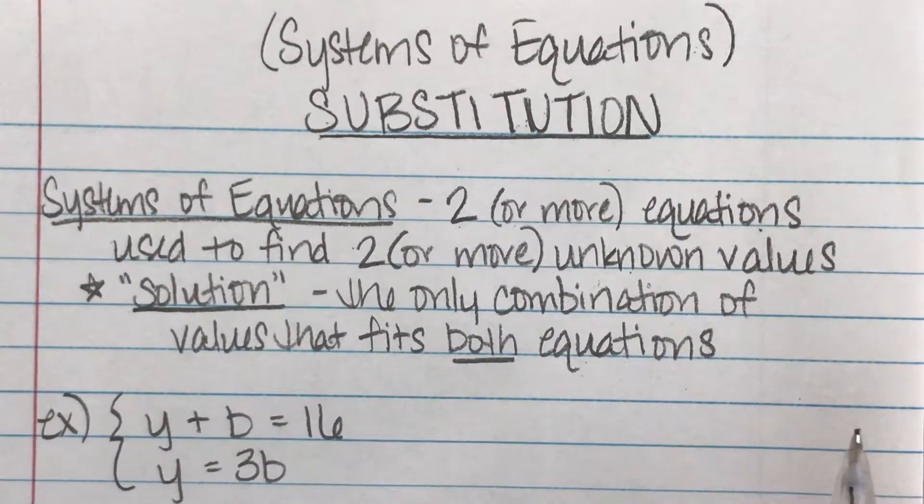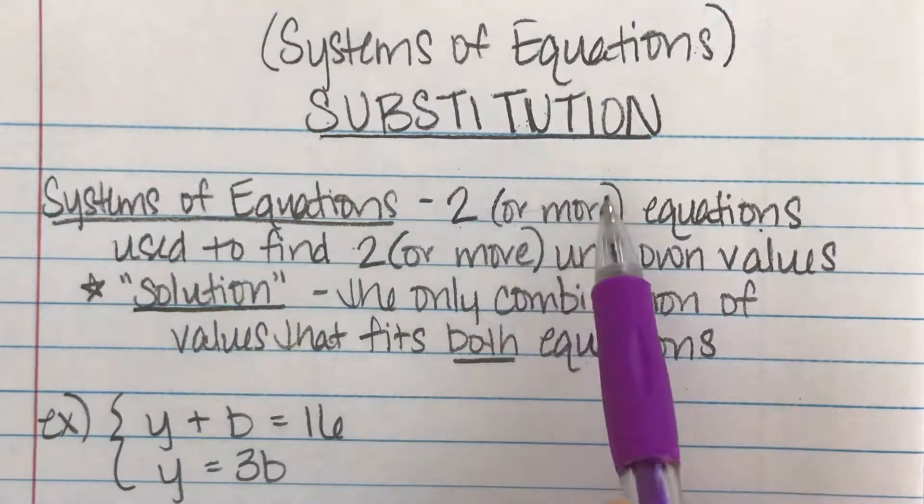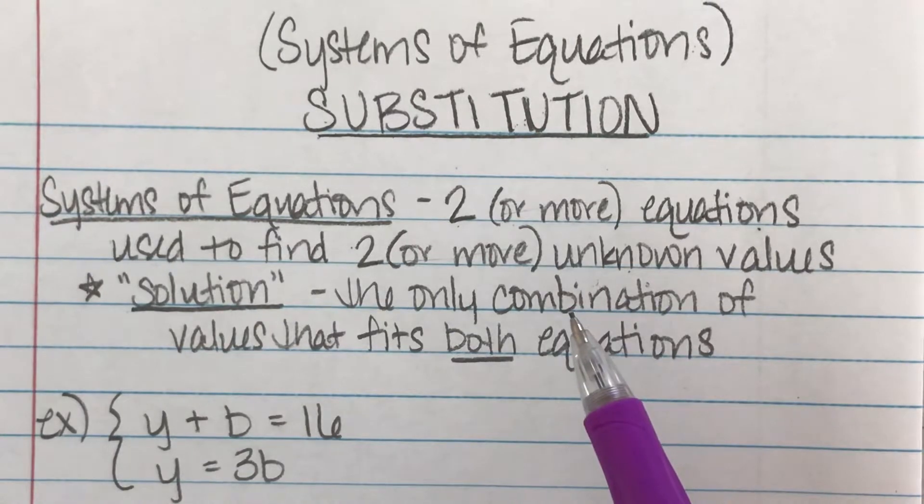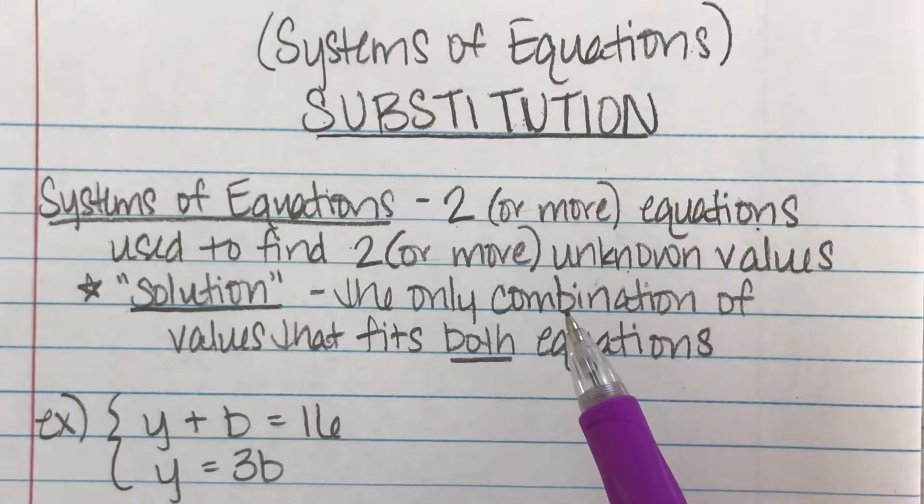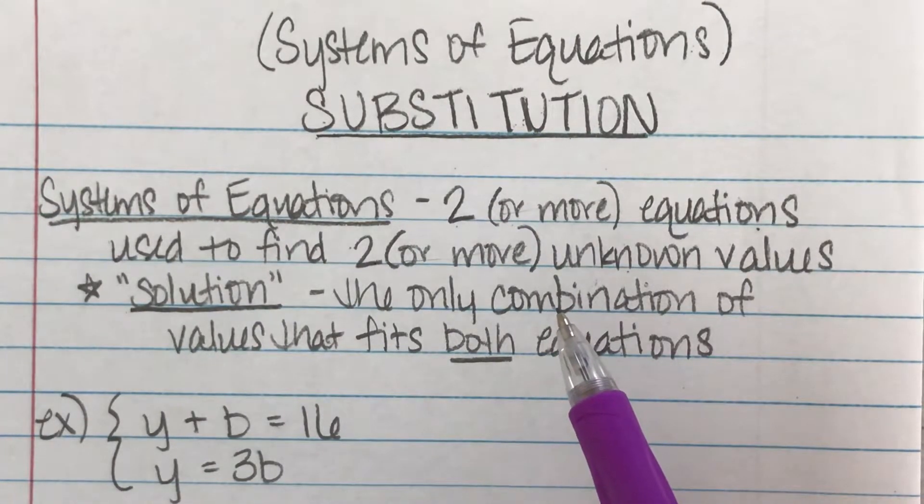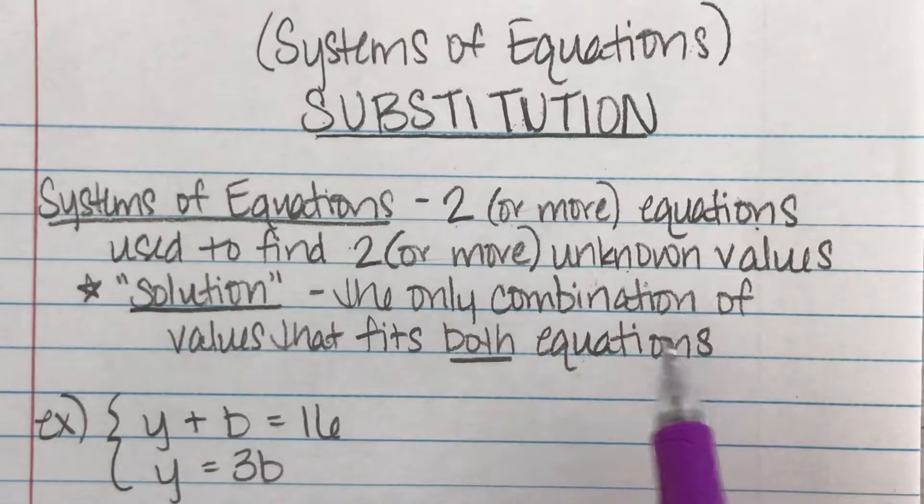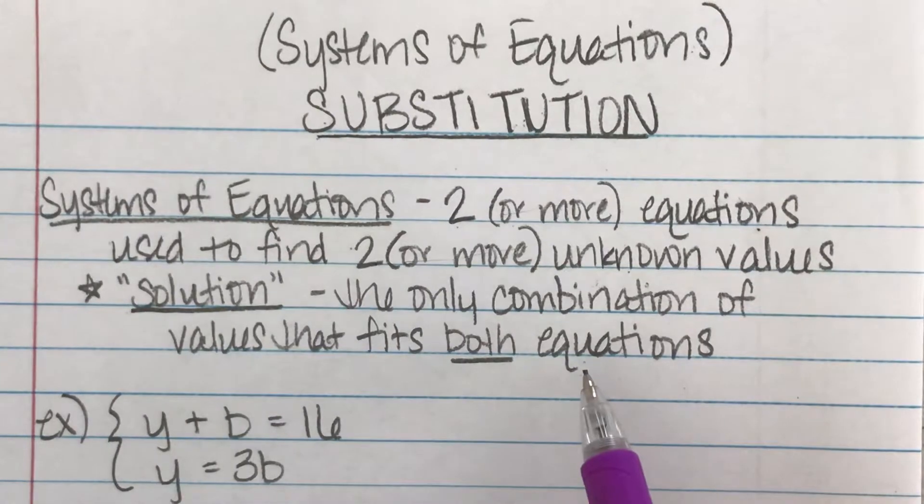Now in Algebra 1, we're not really ever going to see more than two, so don't really worry about that. But I just wanted it to be on your radar that you can have more than two. It's possible to have three missing values.